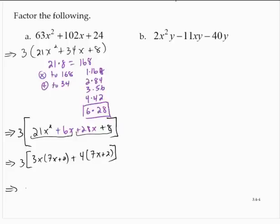And so then that's 3 and bracket. And I'd have a 7x plus 2 times a 3x plus 4. All right. So that's the factored form.